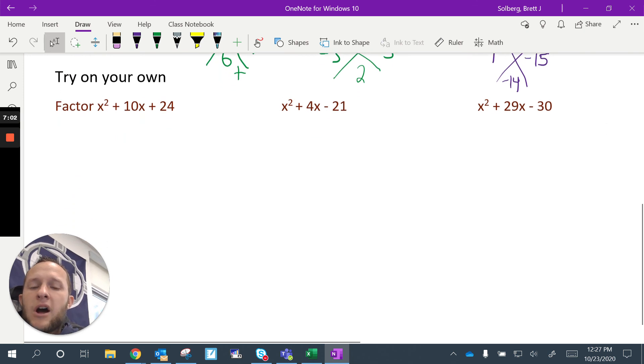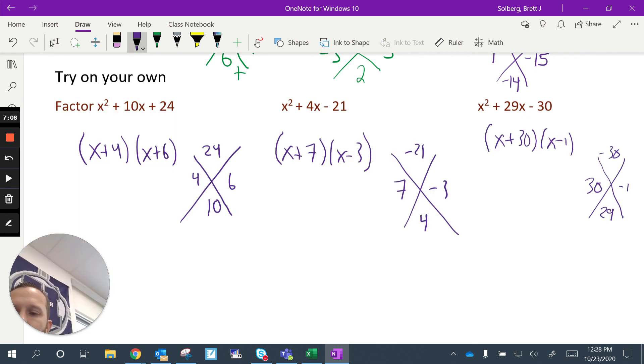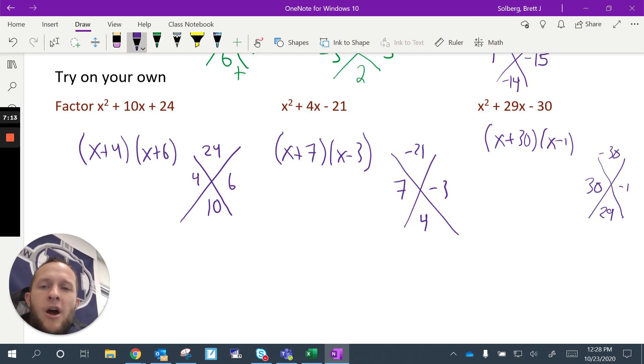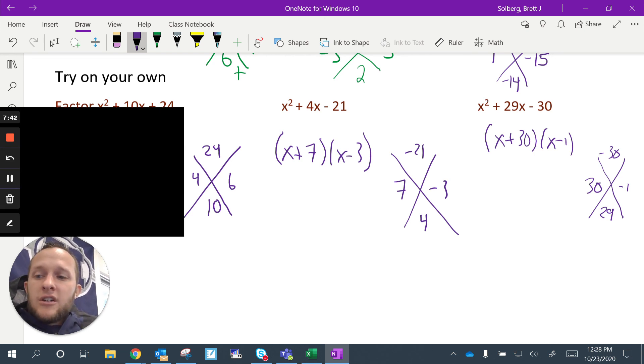Okay, what I want you to do now is I want you to pause and I want you to try these three on your own. All right, I hope you actually took the time to pause and try to work those ones out. But as I've already gone through an answer to them here, what multiplies to 24 and adds to 10? It's 4 and 6. What multiplies to negative 21 and adds to a positive 4? That's 7 and negative 3. What multiplies to negative 30 and adds to 29? That's 30 and negative 1. So that's the basics of factoring when your leading coefficient is just plain old 1. I hope that makes sense. Good luck. And I'll see you next time.